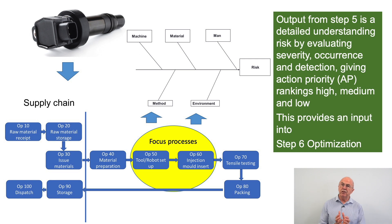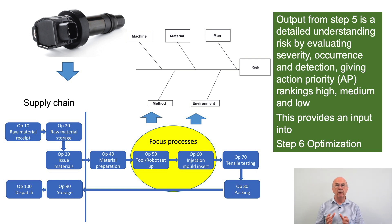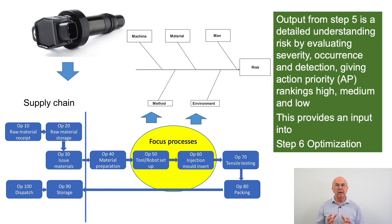In step five, against the risks we'd identified, we came up with rankings of severity, occurrence, and detection, and that led us to an action priority ranking which was either high, medium, or low. This provides an input into step six, which is about optimization.